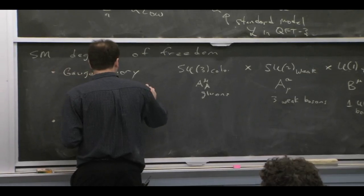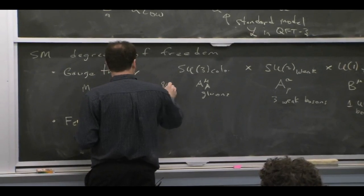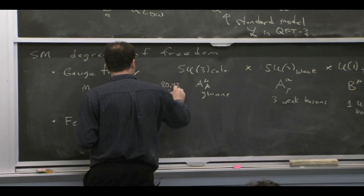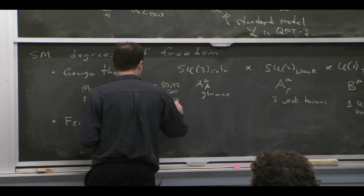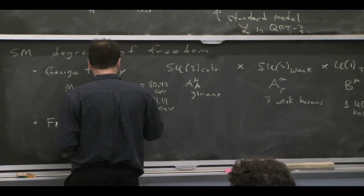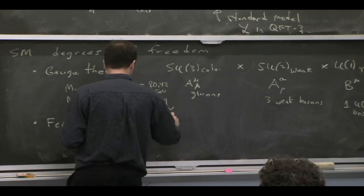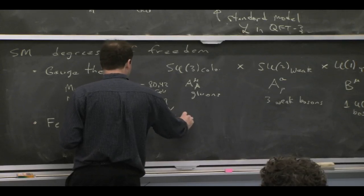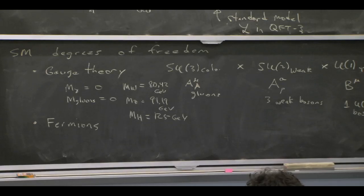And then there's the mass of the W, 80.42 GeV. The mass of the Z, 91.19. And for the first time in me teaching this course, we also know what the mass of the Higgs is. So let me just, that's not part of the gauge theory. But I'll just list it there as well, since it doesn't fit in with the fermions.